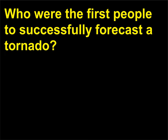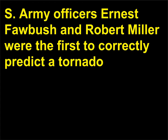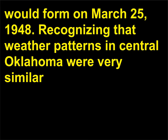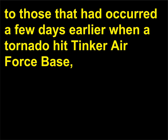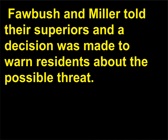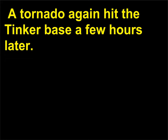Who were the first people to successfully forecast a tornado? U.S. Army officers Ernest Fawbush and Robert Miller were the first to correctly predict a tornado, which they forecast would form on March 25, 1948. Recognizing that weather patterns in central Oklahoma were very similar to those that had occurred a few days earlier when a tornado hit Tinker Air Force Base, Fawbush and Miller warned their superiors, and a decision was made to warn residents. A tornado again hit Tinker Air Force Base a few hours later.